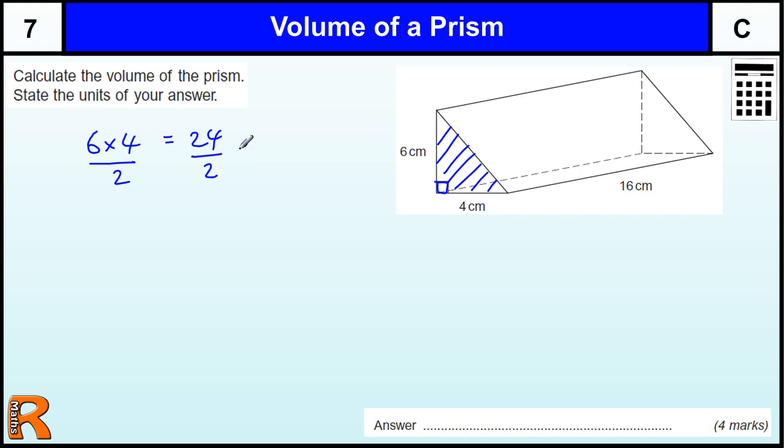To get the triangle we need to half that, which is 12. Once we have that, we've got 12 times the height or length of the prism which is 16. You can use a calculator for that obviously, but that's 192.